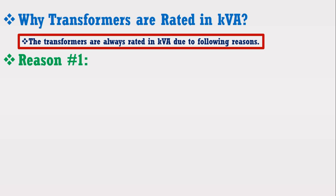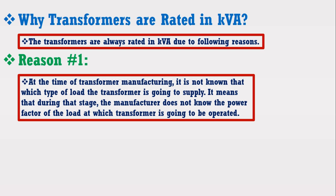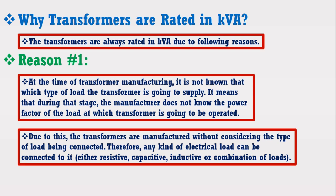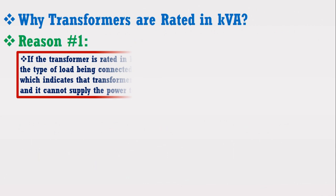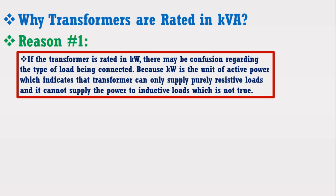The answer is that transformers are always rated in kVA due to the following reasons. Reason No. 1: At the time of transformer manufacturing, it is not known which type of load the transformer is going to supply. It means that during that stage, the manufacturer does not know the power factor of the load at which the transformer is going to be operated. Therefore, any kind of electrical load can be connected to it — either resistive, capacitive, inductive, or a combination. If the transformer is rated in kW, there may be confusion regarding the type of load being connected.